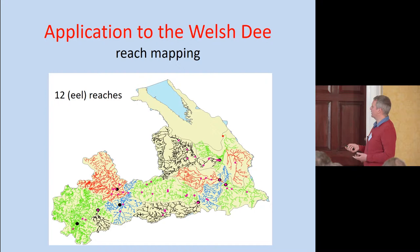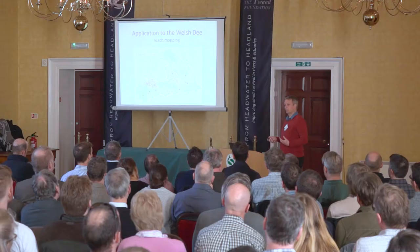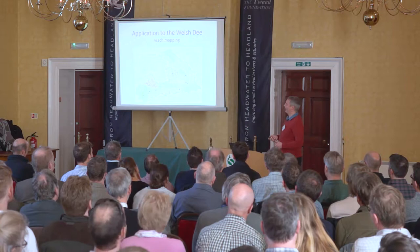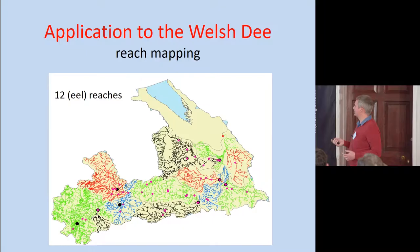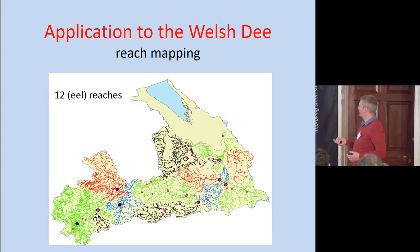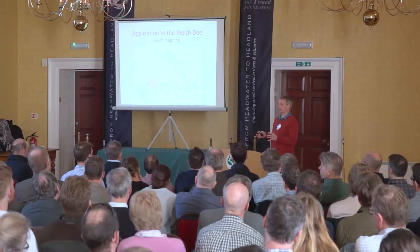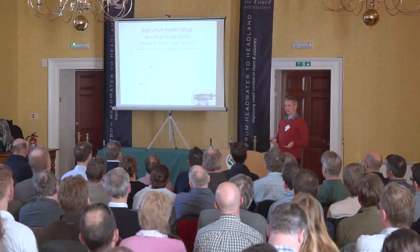For the eel world we converted the Dee into 12 reaches. Each reach here is a different colour — these are pretty large areas of water. You can make it as many reaches as you like, but every reach has a cell in several matrix files. So if you end up with 400 reaches, you've got a massive Excel table which you've got to populate. So there's something to be said for finding a balance in actually applying the model. We've got all of the electrofishing surveys.